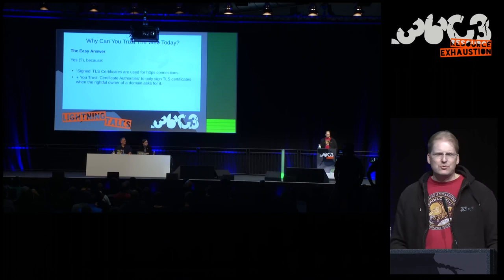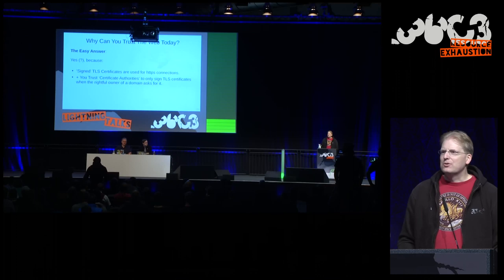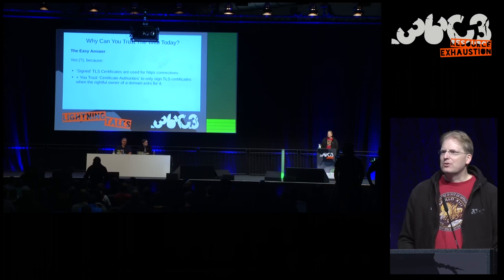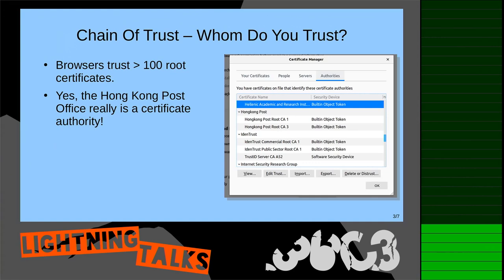Hello, good morning. My name is [speaker] and I have brought a question, an answer, a problem, and a solution today. The question is: why do I usually trust the web today, and why is that sometimes not good enough? The easy answer is that when you go to HTTPS encrypted web pages, they are encrypted and you implicitly trust certificate authorities to only hand out signatures for certificates to the owner of the domain — not to anyone doing a man-in-the-middle attack.